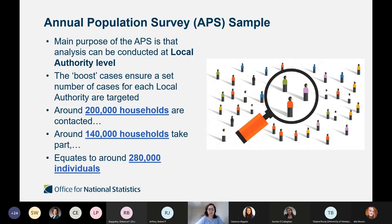The annual population survey sample serves the purpose of conducting analysis at local authority level. The boost cases ensure we have a set number of cases at local level. We contact around 200,000 households, around 140,000 of those take part, and that equates to around 280,000 individuals.